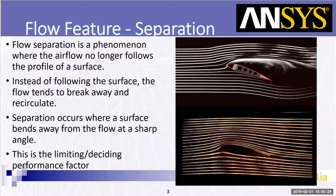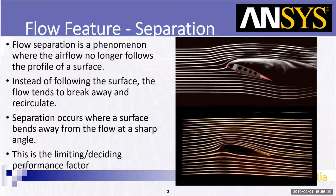The second flow feature to discuss is separation. For me, separation is the limiting or deciding performance factor. As you can see in the top picture, if the flow is separated we're not going to get that same change in velocity at the surface as in the bottom picture. We lose that lifting effect — that's what's called stall in aviation aerodynamics and in car aerodynamics as well. Where the flow separates will decide the performance of that aerodynamic component.